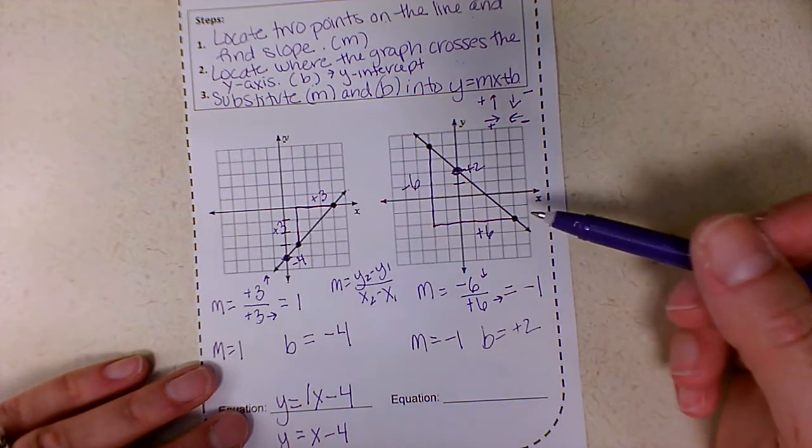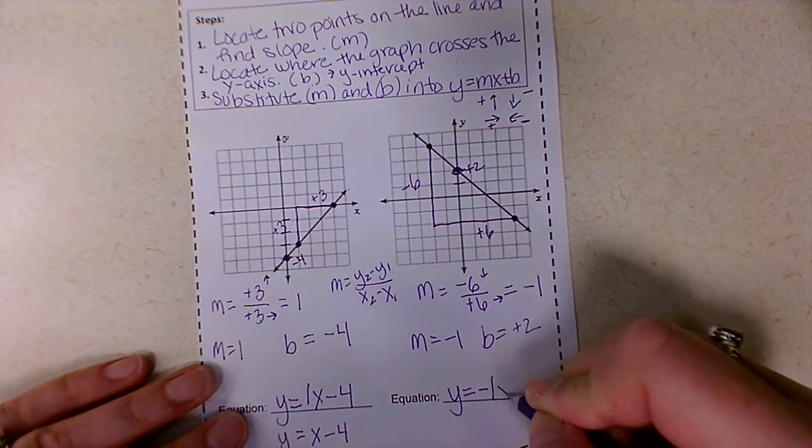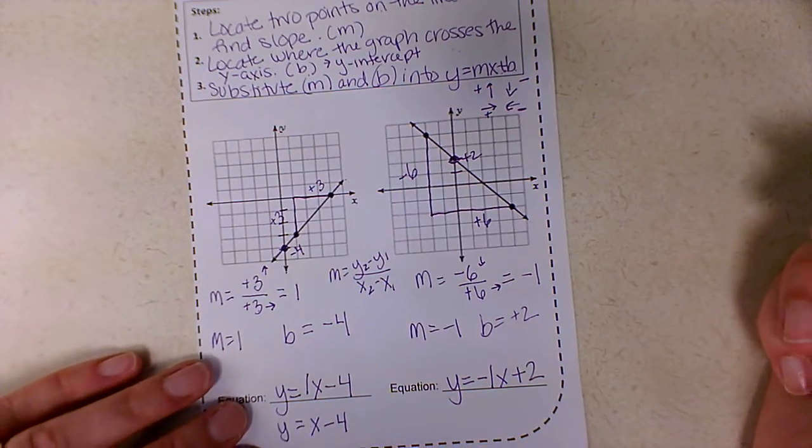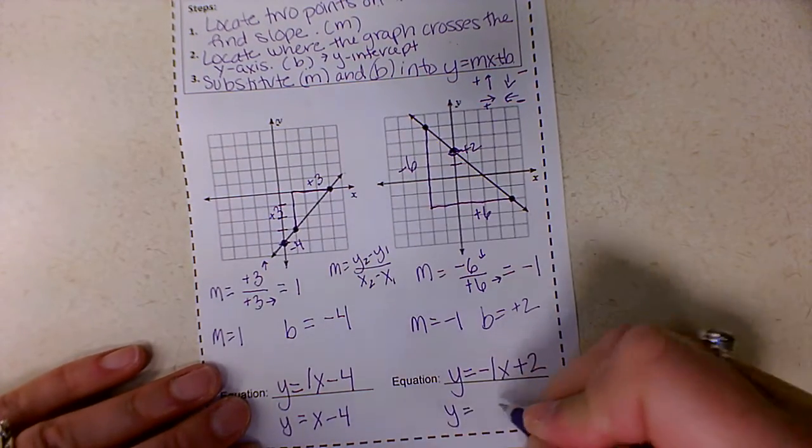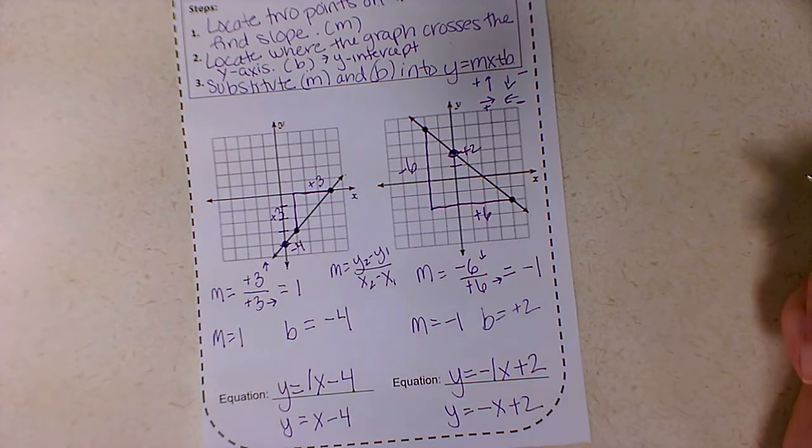Now my third step is to substitute M and B into y equals MX plus B. Y equals negative one X. Since this is positive, it's now plus two. Again, you could write it as y equals negative X plus two. Absolutely fine. I'll accept either one.